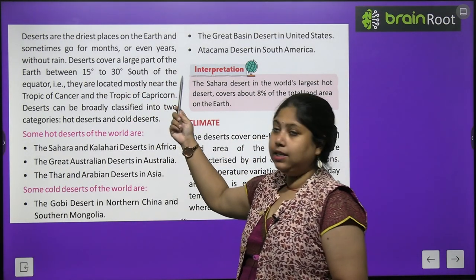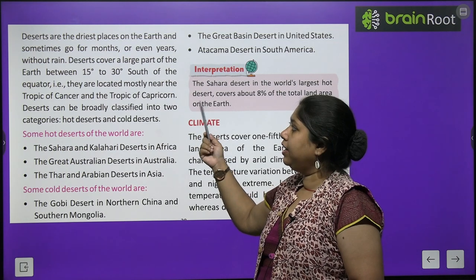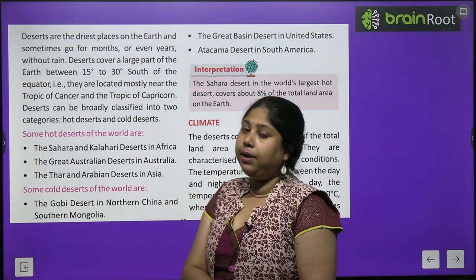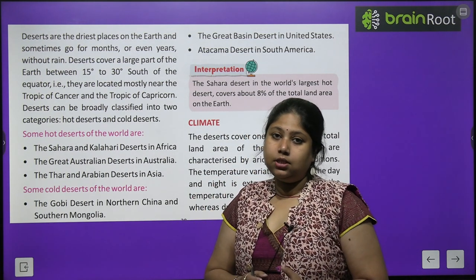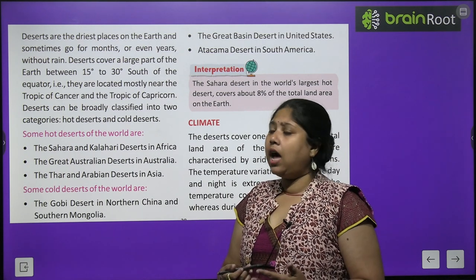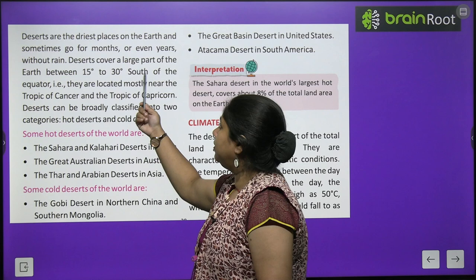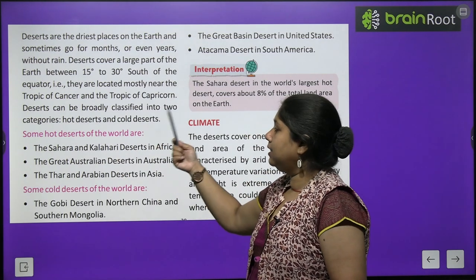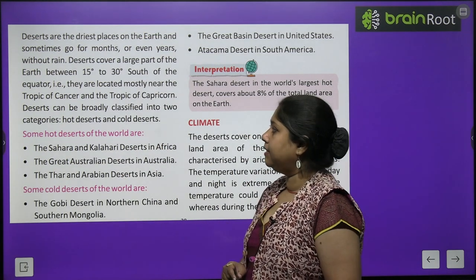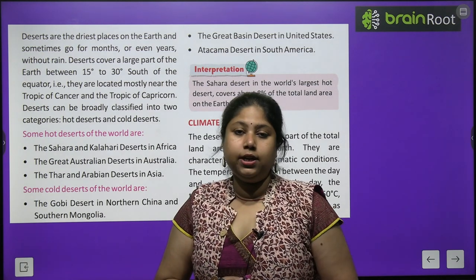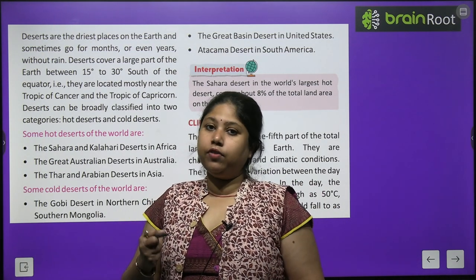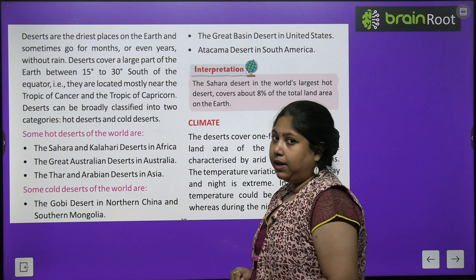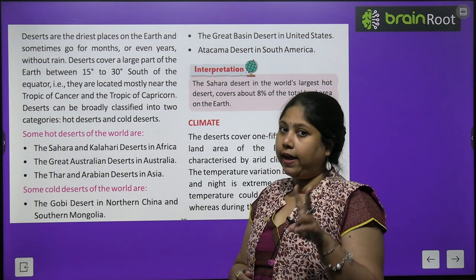Deserts are the driest places on the earth and sometimes go for months or even years without rain. Yaani deserts — marusthal — yeh aisi jagah hain jahaan pe paani nahi milta; kai mahinon ya kai saalon tak barish nahi hoti. Deserts cover a large part of the earth between 15 to 30 degrees south of the equator, located mostly near the Tropic of Cancer and Tropic of Capricorn. Deserts can be classified into two categories: hot deserts and cold deserts.